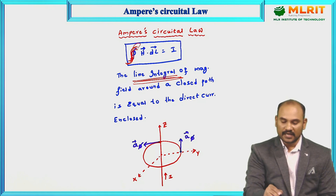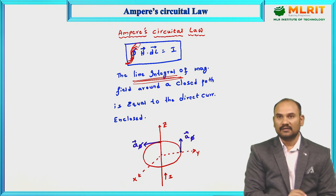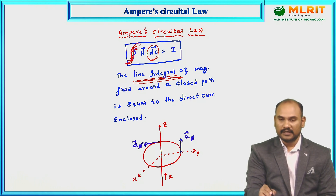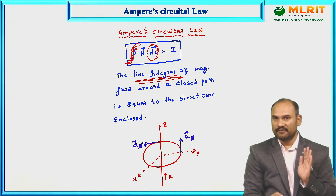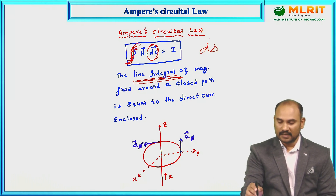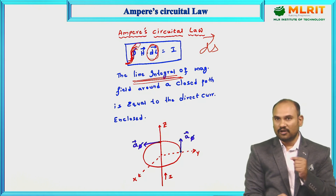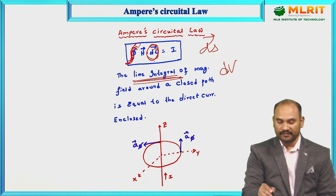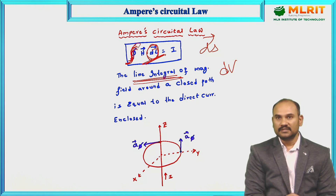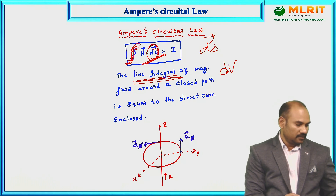How do you identify this as a line integral? Because you have dL here. If it were a surface integral, you would write dS; if it were a volume integral, you would write dV. The presence of dL tells you it is a line integral — a single integral.